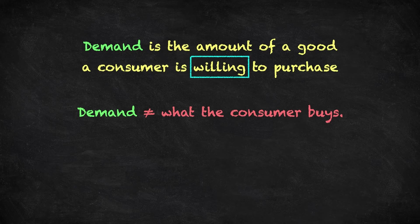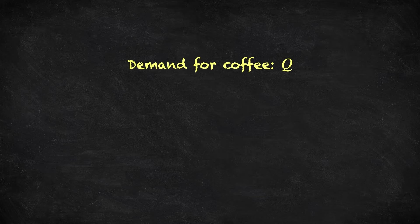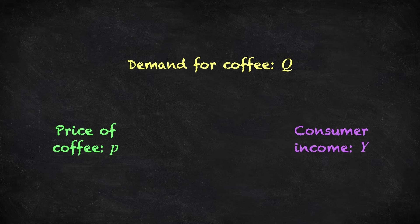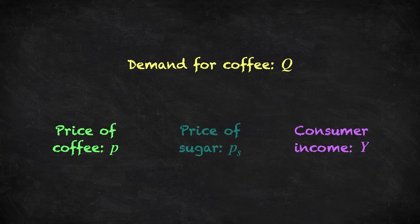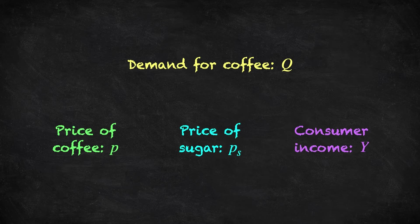Now, demand is going to be affected by many things. Consider a consumer's demand for coffee, we'll denote this quantity capital Q. And let's think about the factors that might affect demand. First and foremost, the price of coffee is going to be central. Also the consumer's income, denoted capital Y, which is how much they can spend, clearly has a role. What about other goods? Perhaps the price of sugar, which is a complement, something the consumer enjoys with their coffee. There are many other factors: the price of substitutes, perhaps tea or hot chocolate, government regulations, the time of year, and more generally just the consumer's tastes. We'll keep it simple and focus just on the price of coffee, the price of sugar, and the consumer's income.